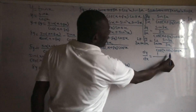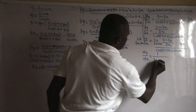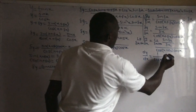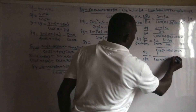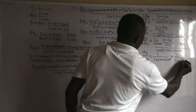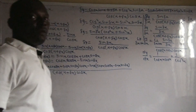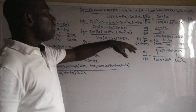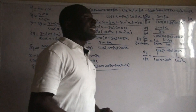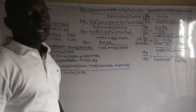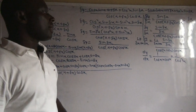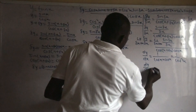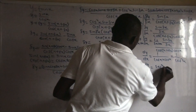Divides: as delta x tends to zero, cos(x + Δx) becomes cos x. So we are left with cos x times cos x, giving 1 over cos²x. From trigonometry, 1 over cos x is sec x, so 1 over cos²x is sec²x. Therefore our dy/dx equals sec²x.